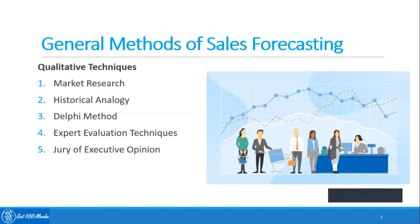The effective use of the jury of executive opinion technique depends on the degree to which the organization is able to overcome sources of bias, including individual bias and group decision-making bias. The most frequent source of bias is political pressure within the company — influence exerted by the member of the jury whose department is the most powerful, causing contributions from other members to carry relatively less weight in the final forecast.